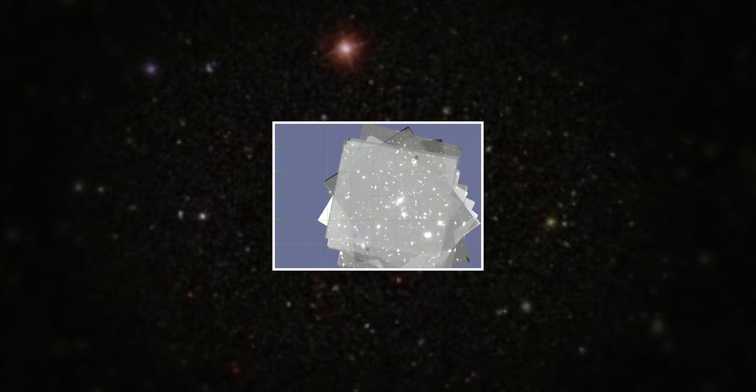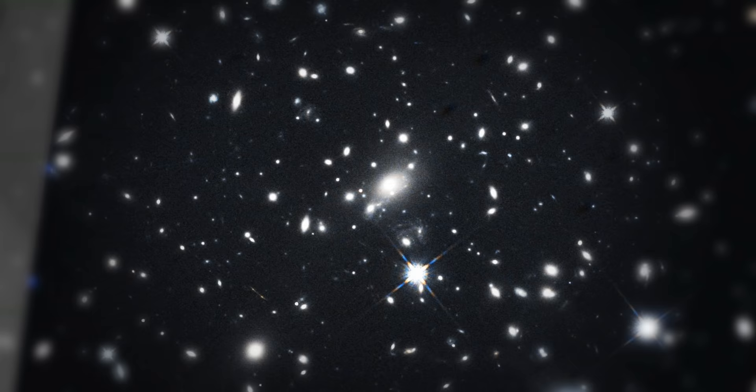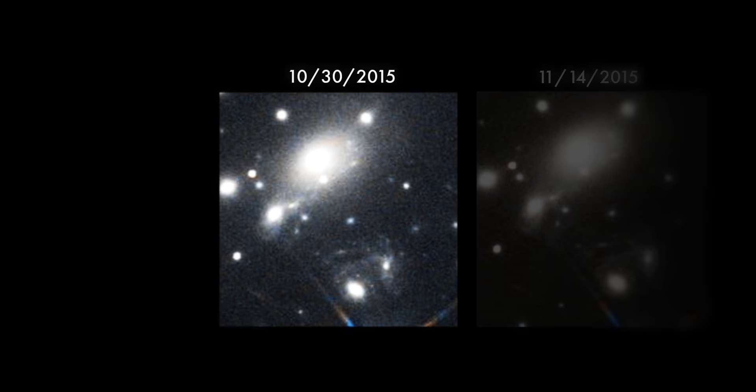They could image this part of the sky roughly once a month starting on October 30th. Before this, the galaxy was too close to the sun to point Hubble at it. In this first image taken at the end of October, there is no supernova. The next image was taken on November 14th. Again, no supernova.